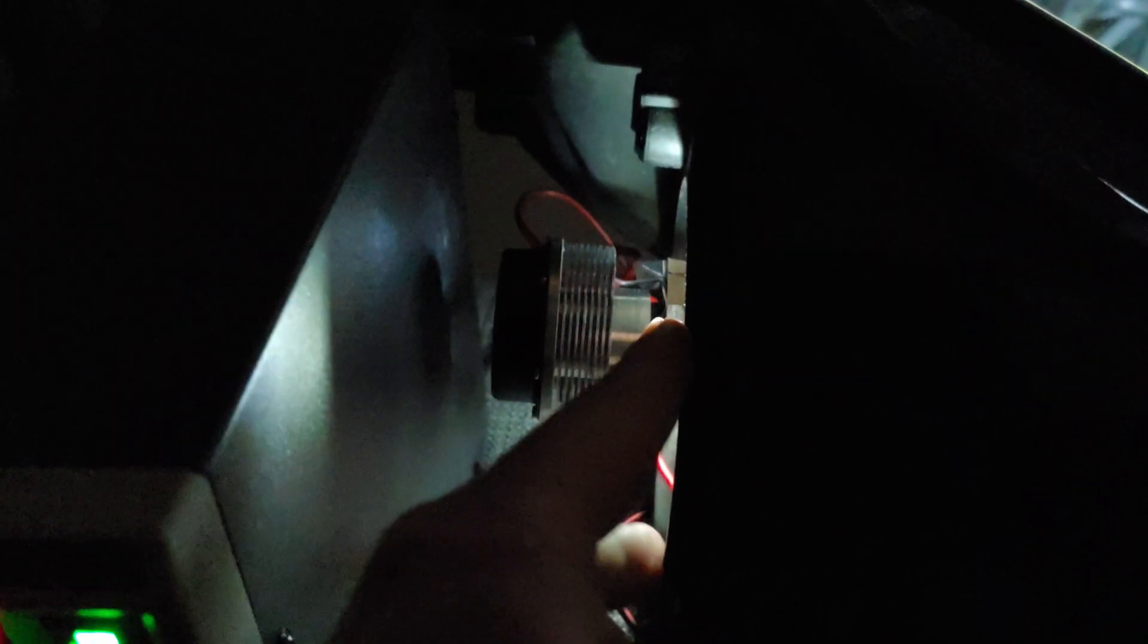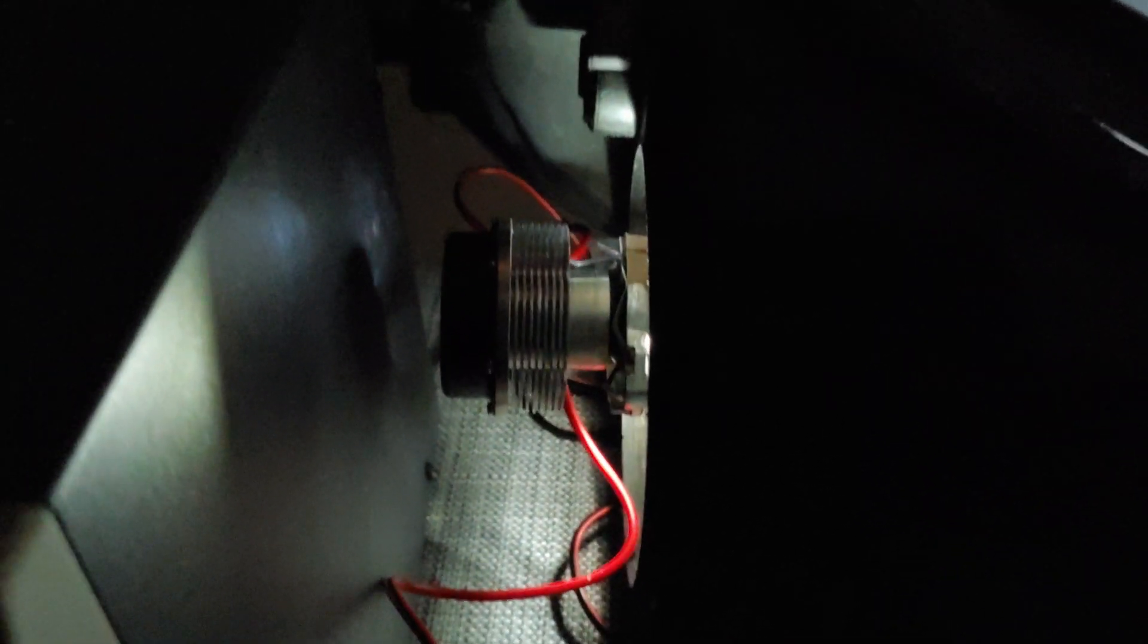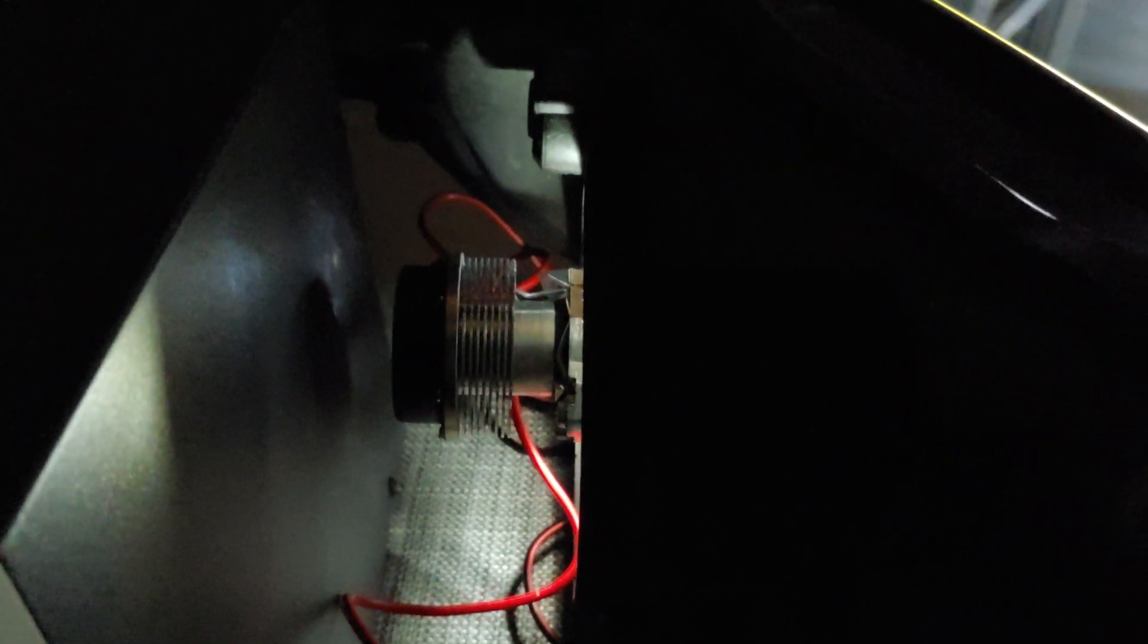And not sure how well you can see, but this is the back of the assembly where the dust cap would be. And we have another about inch and a half of heat sink sticking off the back. If you have a tight engine bay, this bulb would not have worked for you.